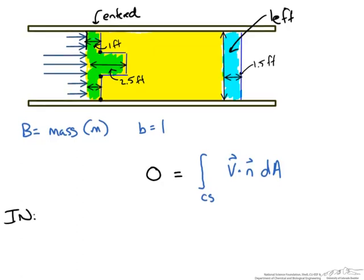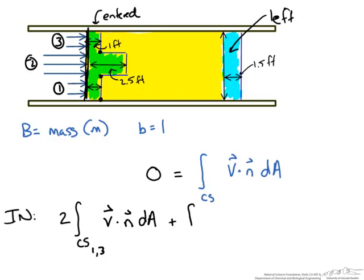Looking at what's coming into the control volume, our original control surface was marked right here. We have broken that up into three regions. Two of them are identical at the bottom and top. We will say we have two times whatever has broken the control surface. We will call this region 1, this region 2, and this region 3. This is the dot product of the velocity times the normal over the area of interest.